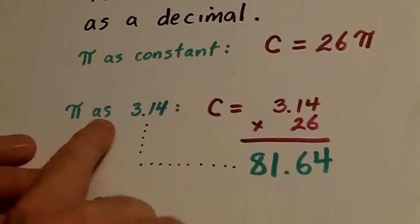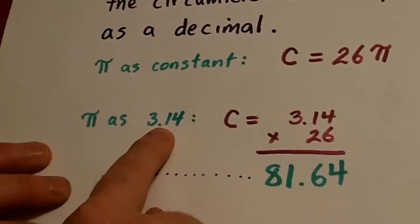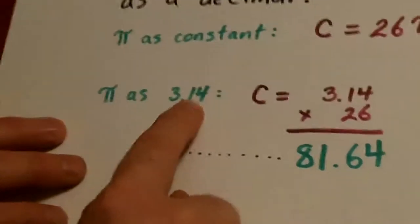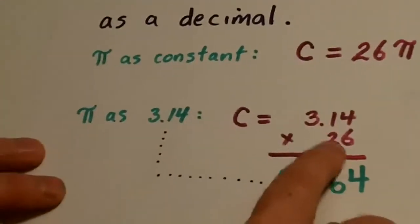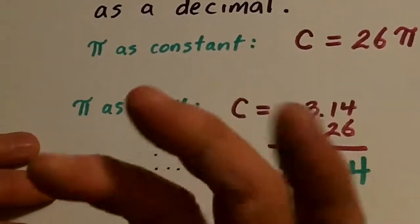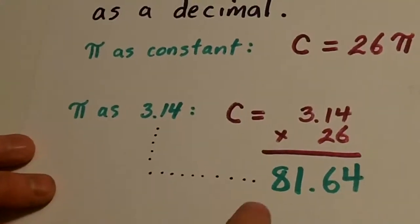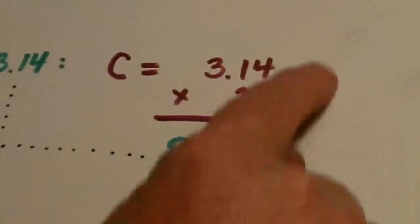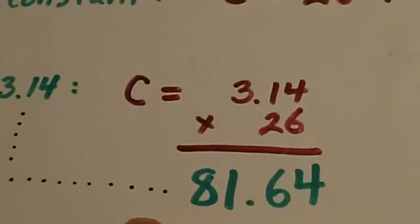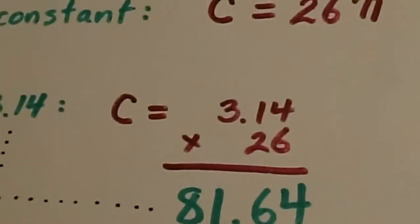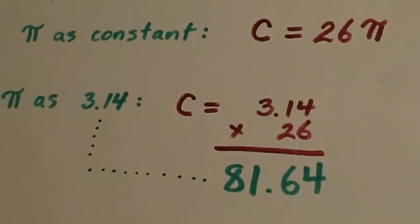Now, if we take pi as 3.14, what we're going to have to do is, instead of just saying 26 pi, it's going to be 26 times 3.14. But here's the tricky part. You have to be able to multiply those numbers, then do the decimals just right and get that exactly as 81.64.